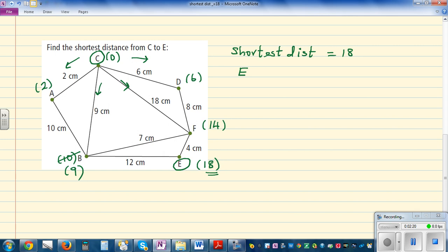18 minus 4 is 14. So from E you're going to F, and from F you're going to D, and from D you're going to C. This is very simple. So the shortest path would be C, D, F, E.